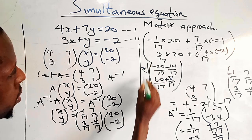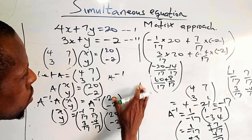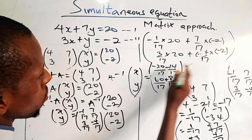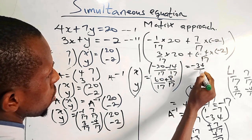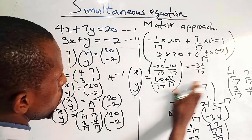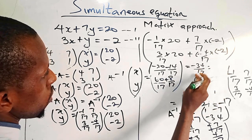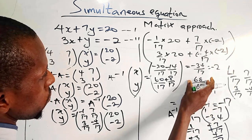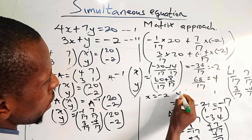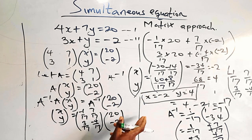From here we can easily determine x and y. For x, the top row gives minus 34 over 17, and for y the bottom row gives 60 plus 8 is 68 over 17. Dividing, x equals minus 2 and y equals 4. So using the matrix approach to resolve a simultaneous equation, we get x equals minus 2 and y equals 4.